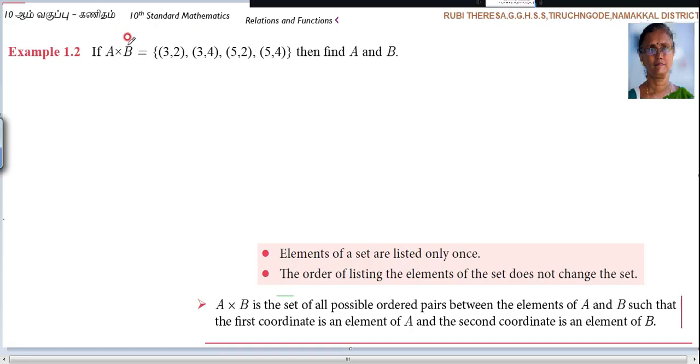Listen here, if A cross B equals (3, 2), (3, 4), (5, 2), (5, 4), then find A and B.